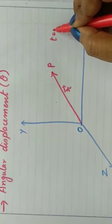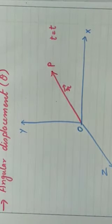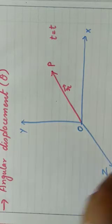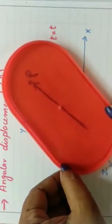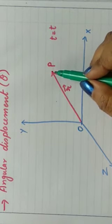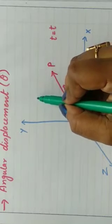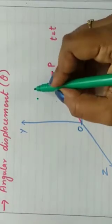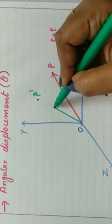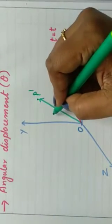At time T, this is the initial time. Now after some time, as this body rotates, this particle P also changes its position. So after some time, this very same particle reaches a new position. We call this new position P', and this new position vector we call R'.